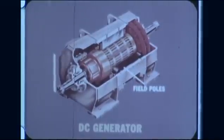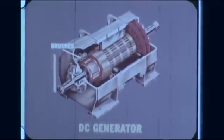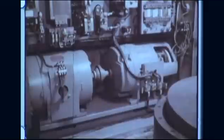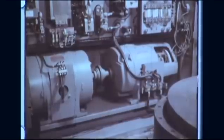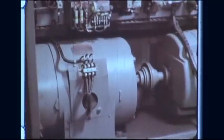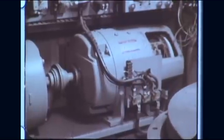In the direct current generator, the field poles, which establish the magnetic field, are stationary. The armature, which contains the commutator, must be the rotating part so that the stationary brushes can collect the current, rectifying it by switching the load current from one set of commutator segments to another. However, the DC generator is limited in capacity because high voltages would cause damaging arcing at the commutator. Therefore, because they are seldom rated as high as 750 volts, they are used only for the generation of power in specialized applications.